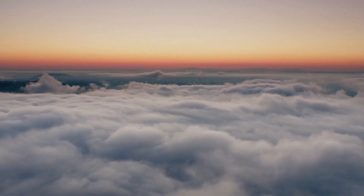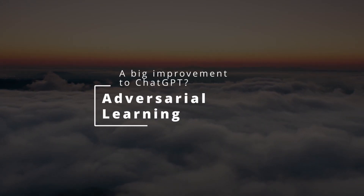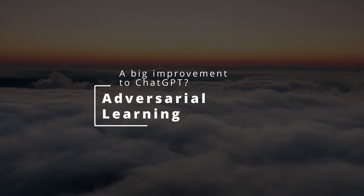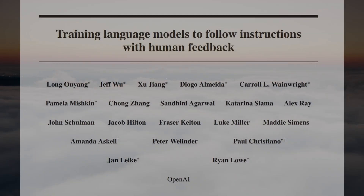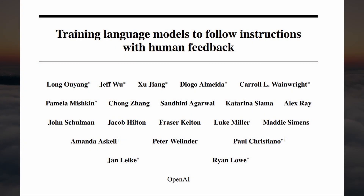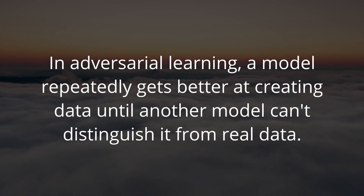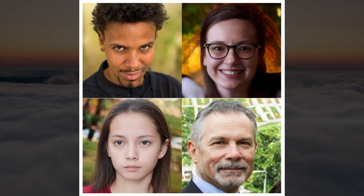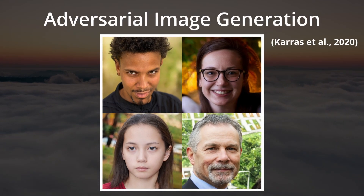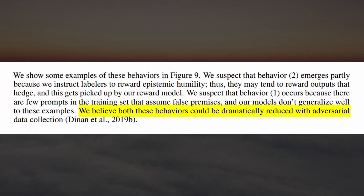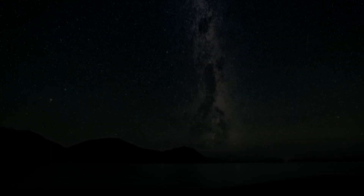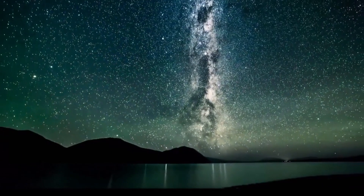The scariest thing is that certain techniques are likely to dramatically improve ChatGPT's performance. For example, ChatGPT is largely based on InstructGPT, which did not implement Adversarial Learning. Adversarial Learning is a powerful technique used to create synthetic images indistinguishable from real ones. Assuming it has not already been added, ChatGPT's performance could skyrocket with this technique.